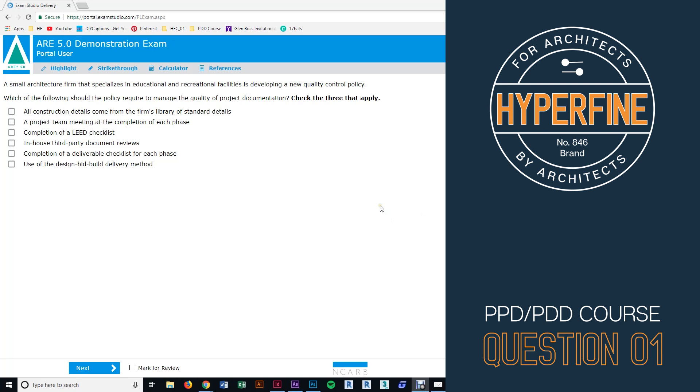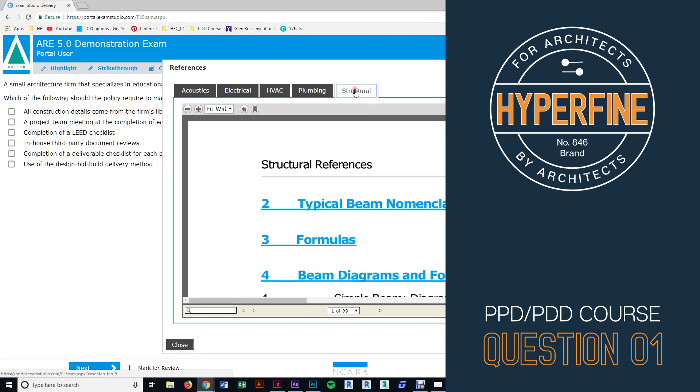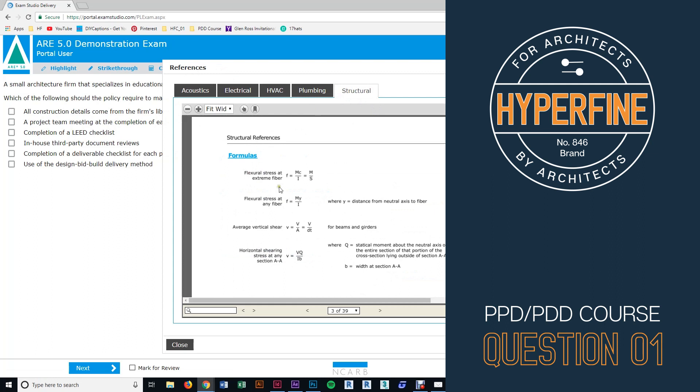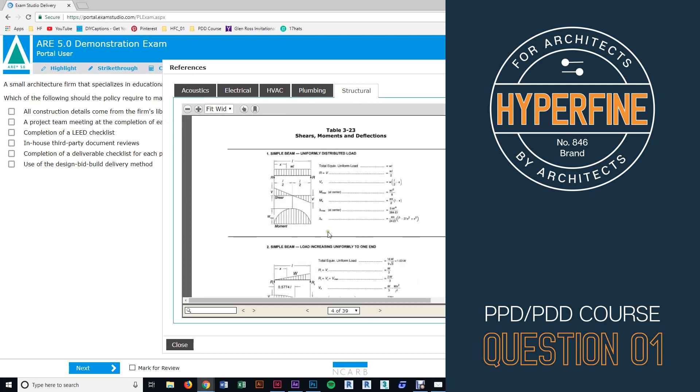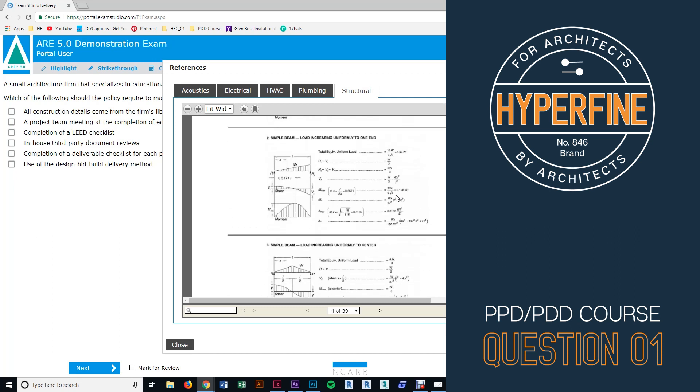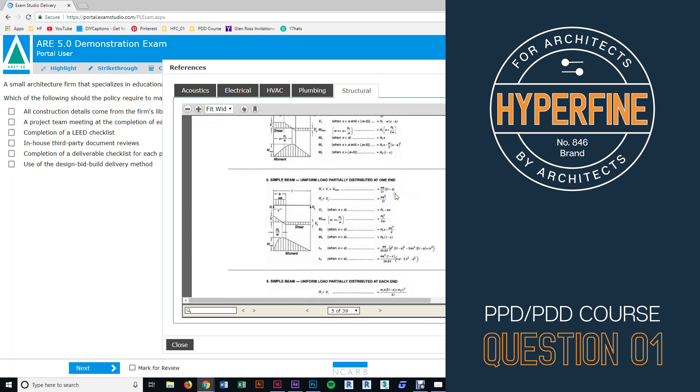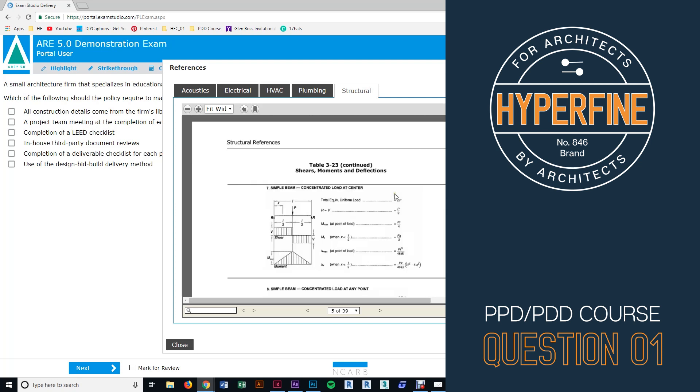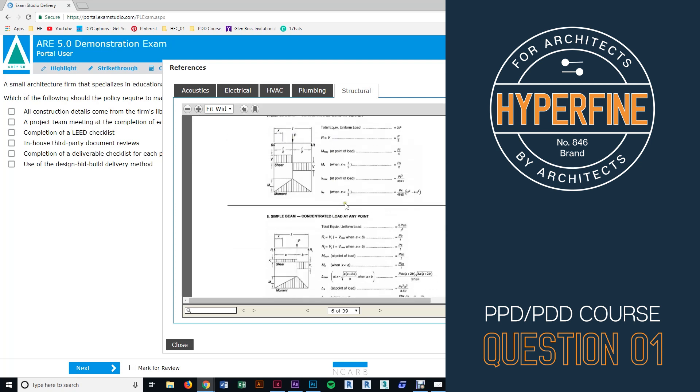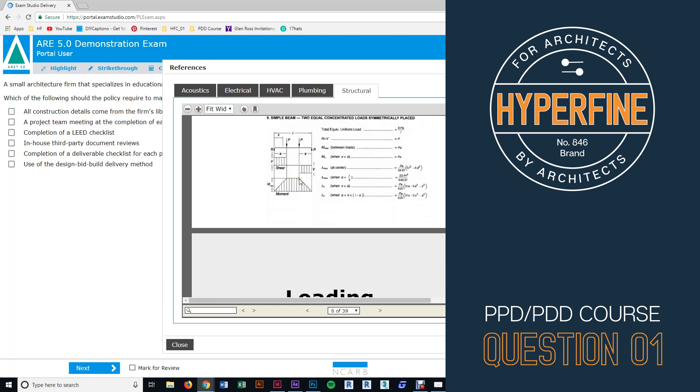If you get on the exam and you have a question where you have to show some knowledge about moments and you don't have those formulas memorized, they give them to you. Go up to references, click on structural formulas, and they'll be on the second page. You can see there's the moment max formula WL squared there, and if you scroll down you can see a lot of the other common loading conditions you might experience. But really the point loads and the uniformly distributed loads are the most common ones you're going to see.